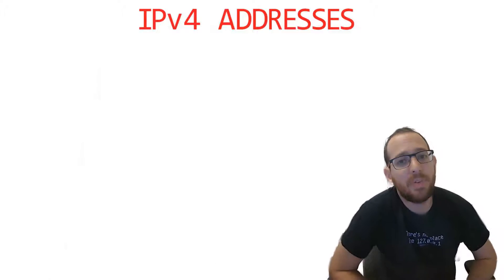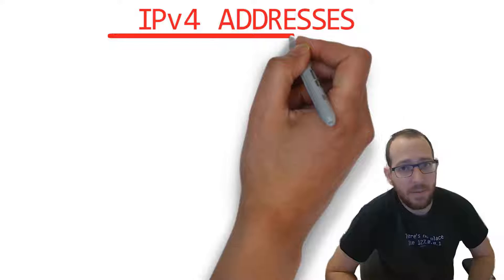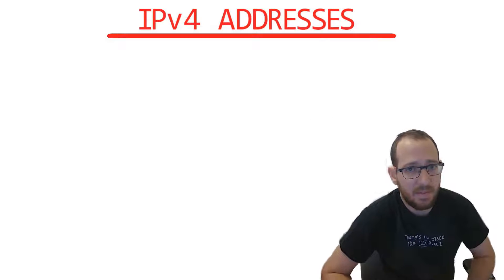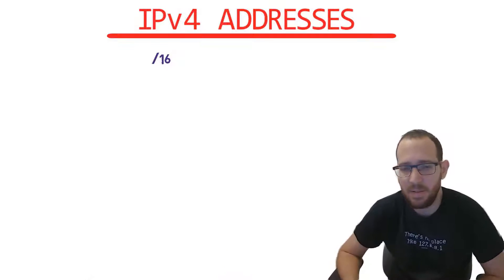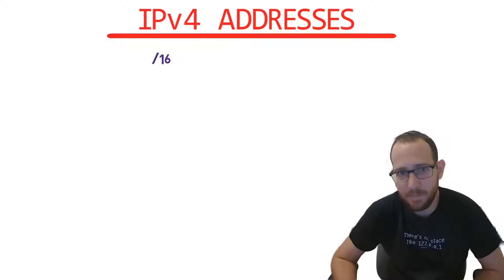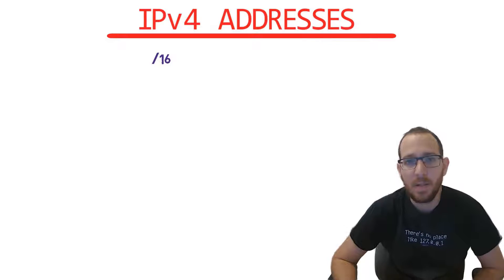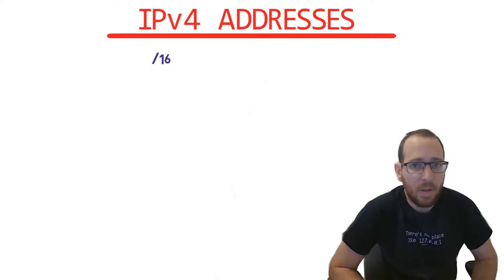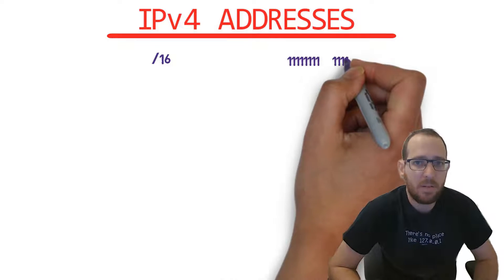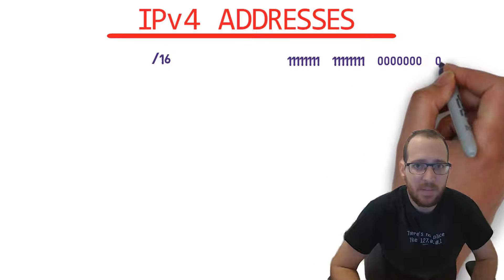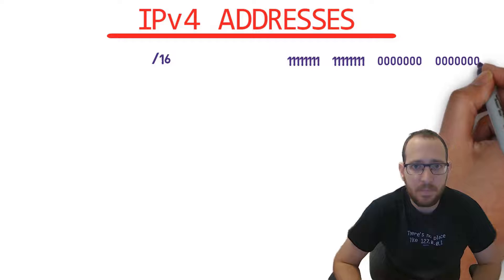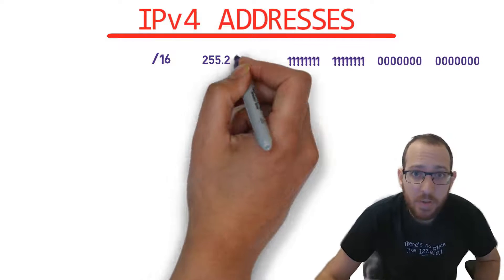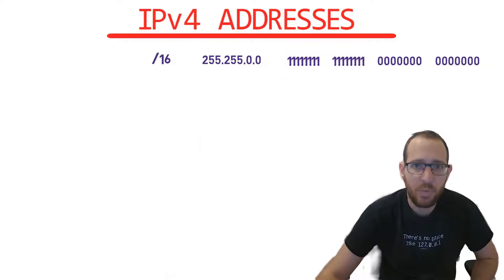How do we represent a network prefix of 16 bits, written as /16, as a subnet mask? We need 16 bits that are on. When 8 bits are on, we get 255 in decimal. So we would use 255.255.0.0.